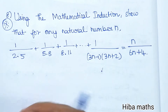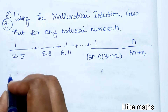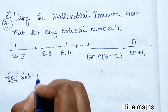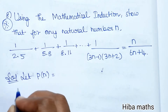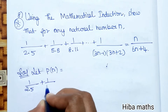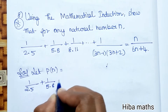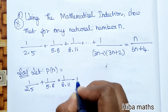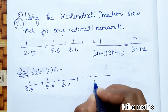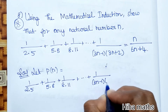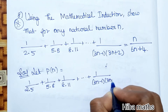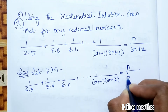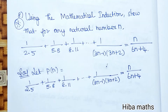Now the question is P(N). Solution: Let P(N) be 1/(2×5) + 1/(5×8) + 1/(8×11) + ... + 1/((3N−1)(3N+2)) = N/(6N+4).